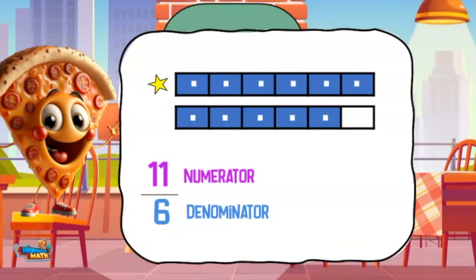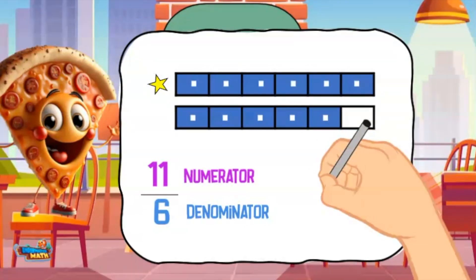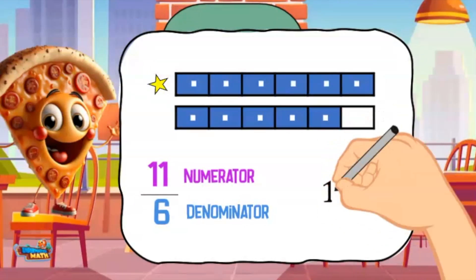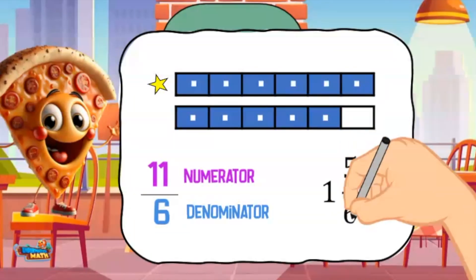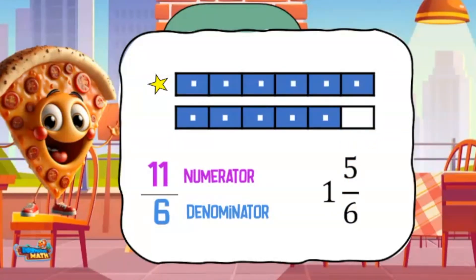But wait — there is another way to write this fraction. There is one whole filled in, so we write the number one, and there is a fraction of a whole filled in. There are five sixths shaded in, so I write the number five over the number six. The fraction is read one and five sixths.